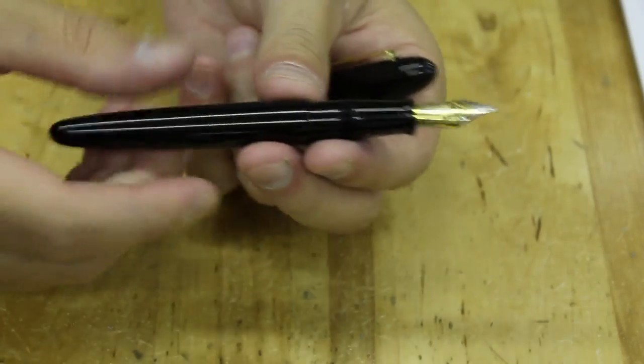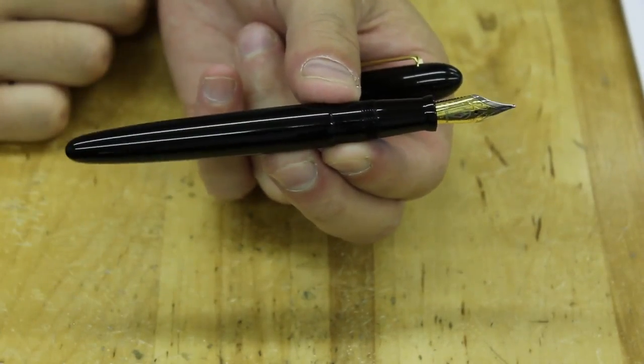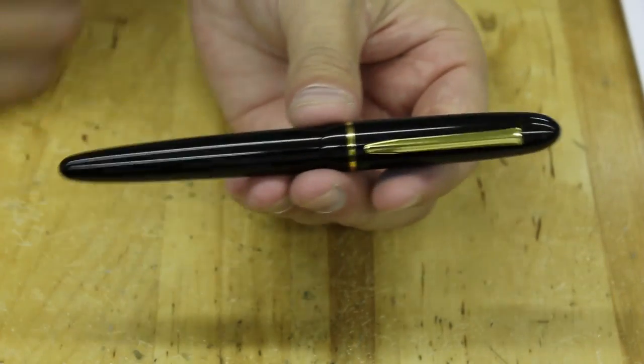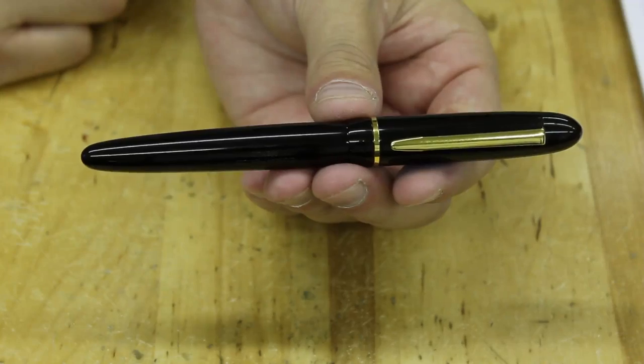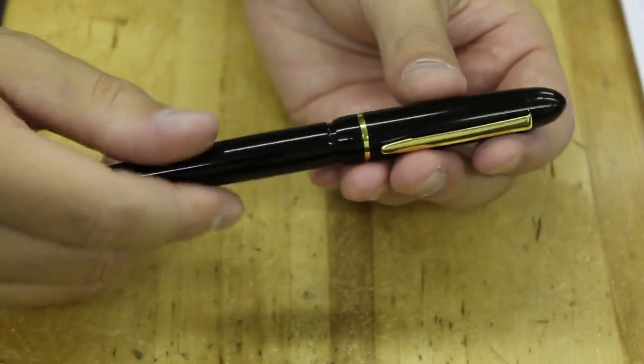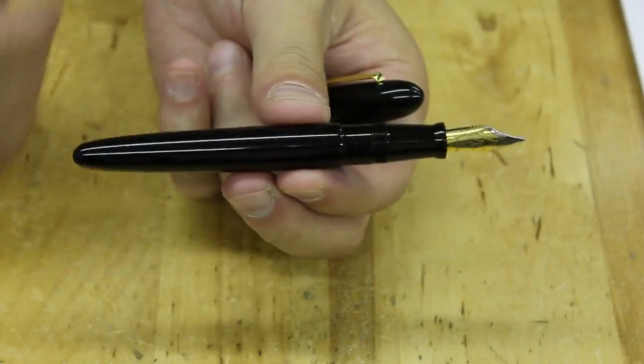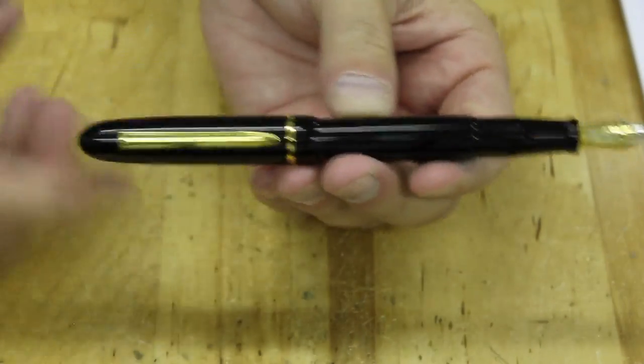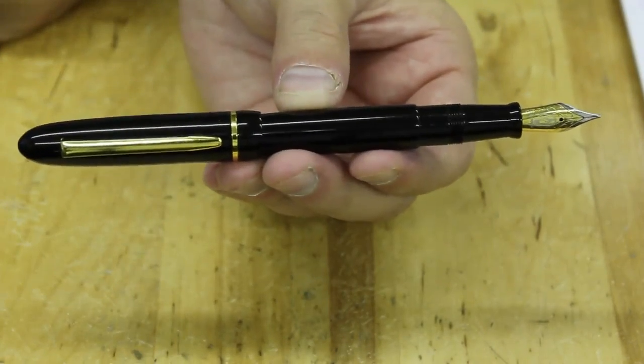Uncapped, the pen is 15 grams. Still relatively light. With the cap on, the pen is five and three quarters of an inch long. With the cap off, the pen is five and three eighths of an inch long. And then, when the pen is posted, it is six and a half inches long.